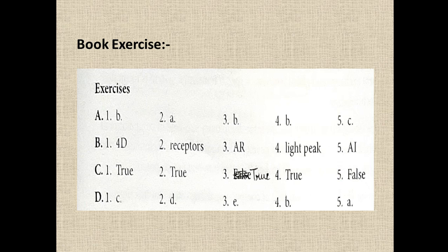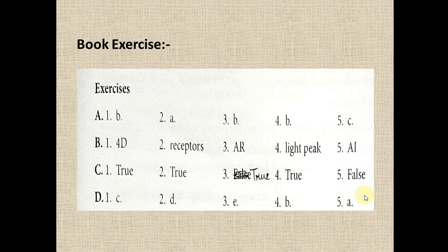Now matching. First: intelligent reports — intelligent reports is called artificial intelligence, so answer will be C. Second: corpus of text — machine translation is used, so answer will be E. Third: computational intelligence, that is soft computing, answer will be B. Fourth: voice synthesis — this is TTS, so answer will be A. Book work is completed.